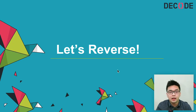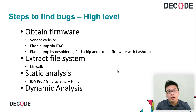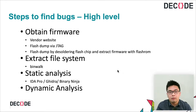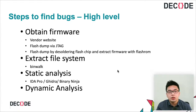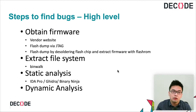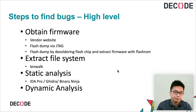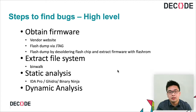Let's head straight into hardware reversing. To find vulnerabilities in IoT devices, routers, or other embedded devices, you can follow these high-level steps. First, you need to obtain the firmware. The easiest way is to go to the vendor website and download it if available. But sometimes vendors do not provide that on their website.